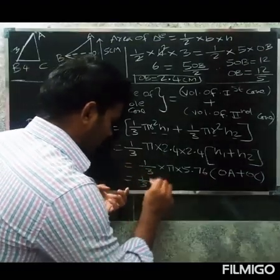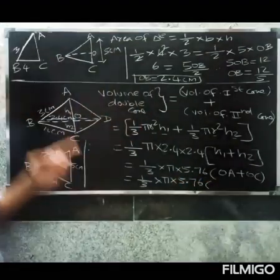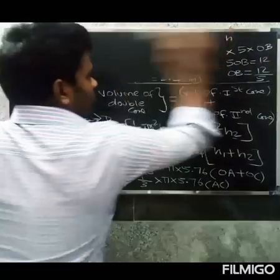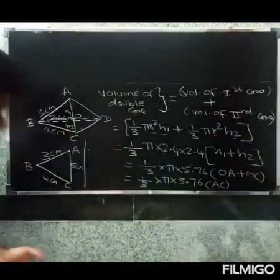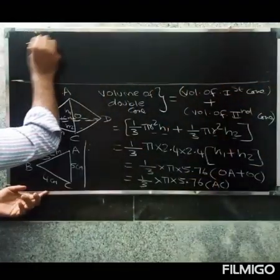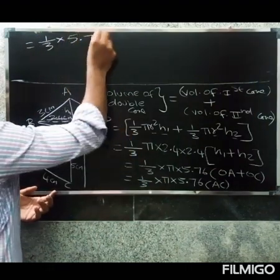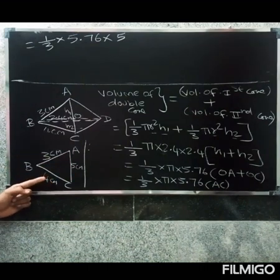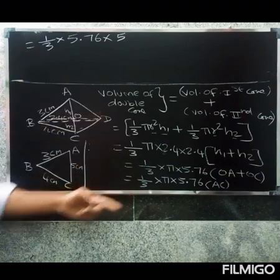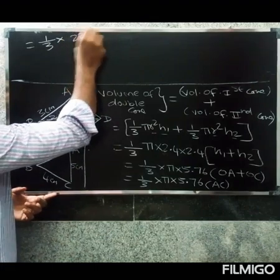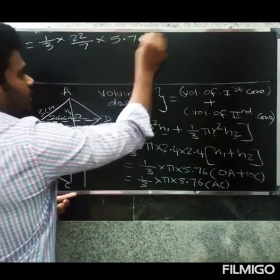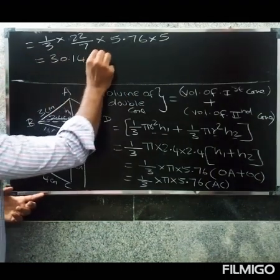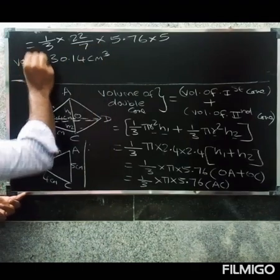So volume equals one by three into 5.76 into 5 into pi. Using pi equals 22 by 7: one by three into 22 by 7 into 5.76 into 5. Multiplying this out gives the volume of the two cones as approximately 30.14 cubic centimeters.